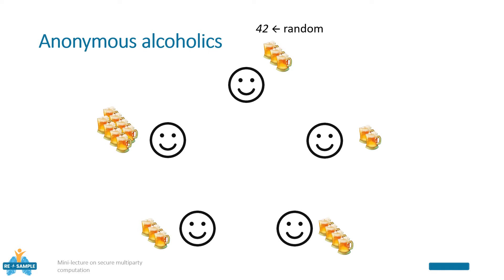A really simple solution is the following. One of the alcoholics picks randomly a number, 42 in our example, and keeps it secret. He then adds his own amount of beers drank the day before to this random value. Then he passes this new value on to the next alcoholic.